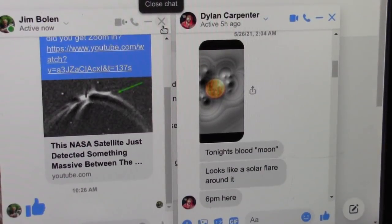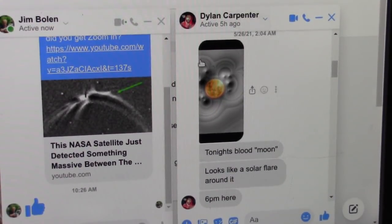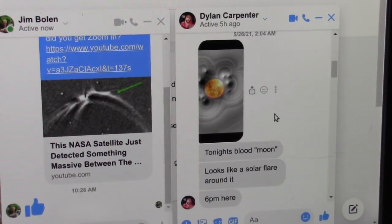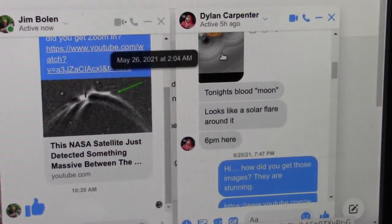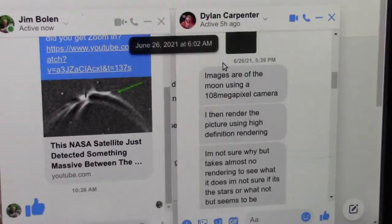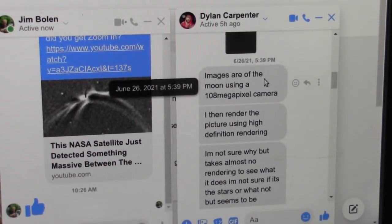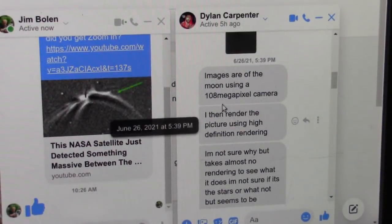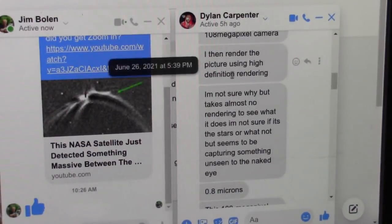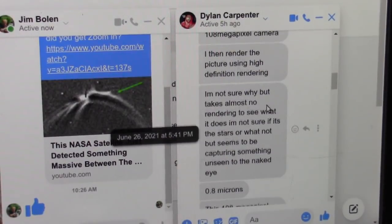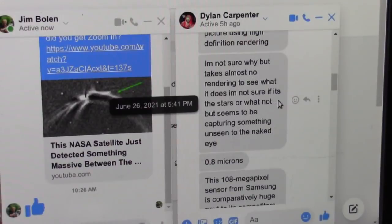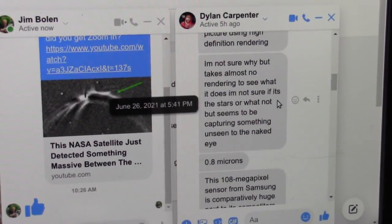All right, I'm going to read you this. This is from Dylan Carpenter. He's Rod's nephew, Rod Warren. I've talked about a bazillion times who came up with the Venturi that showed us the particles and proved that light is a dipole. Now, this, I cannot home in on each one of these shots. I'm just going to come right down to where he explains what he's using. He says, the images are of the moon using a 108-megapixel camera. He rendered the picture using high-definition rendering. He says, I'm not sure why, but takes almost no rendering to see what it does. I'm not sure if it's the stars or whatnot, but seems to be capturing something unseen by the naked eye. Yes, absolutely.